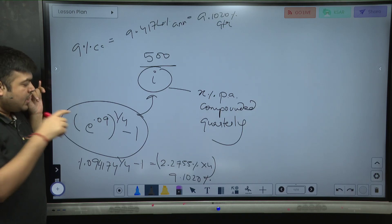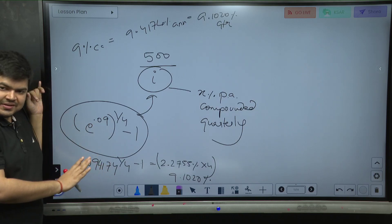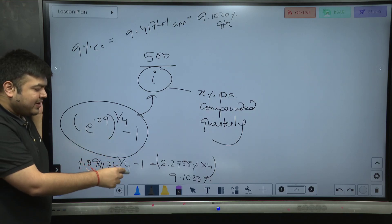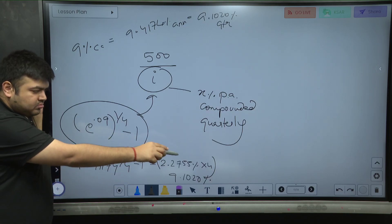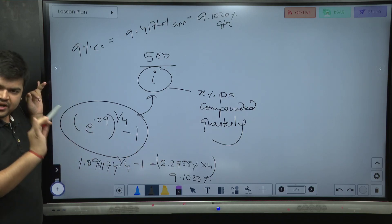So e to power 0.09 which is 1.094174 - this is per annum compounding. What is quarterly compounding? One fourth minus one into four. So this 9.1020 is quarterly compounding rate.